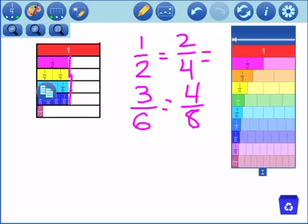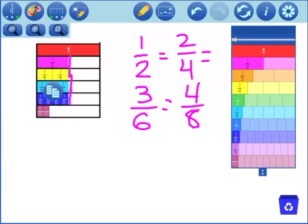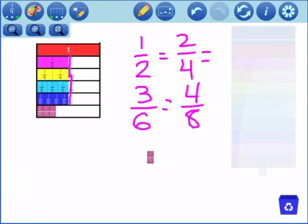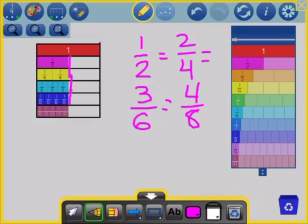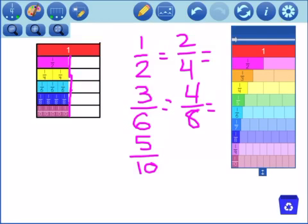Let's try it one more with the tenths. And there we go. I did it one more time. And here we've got 5 tenths. So 1 half, 2 fourths, 3 sixths, 4 eighths, 5 tenths are all equivalent fractions. They are all equal to 1 half because they all hold the same value.